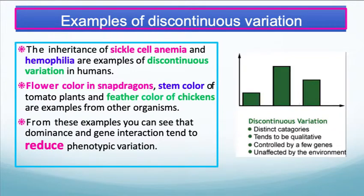Examples of discontinuous variation include the inheritance of sickle cell anemia and hemophilia in humans, flower color in snapdragons, stem color of tomato plants, and feather color of chickens. From these examples, you can see that dominance and gene interaction tend to reduce phenotypic variation.